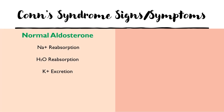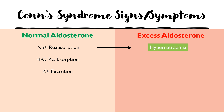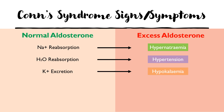Regarding the signs and symptoms of Conn's syndrome, we can extrapolate from the normal functions of aldosterone to see what happens with too much of it. Too much aldosterone causes hypernatremia (excess sodium), hypertension or hypervolemia from excess water reabsorption, and hypokalemia (less potassium) from too much potassium excretion. These electrolyte and blood pressure changes determine the symptoms the patient experiences.